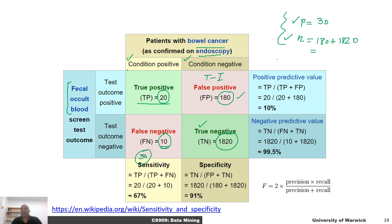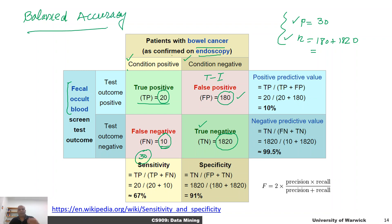That's why accuracy is not a good metric in this case. What you can do is calculate something called balanced accuracy. We're going to talk about that in just a minute. Before we do, I'm going to define some terms that are really important for you to remember and understand.